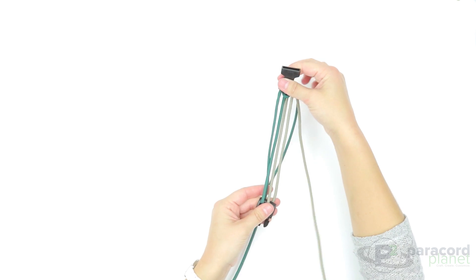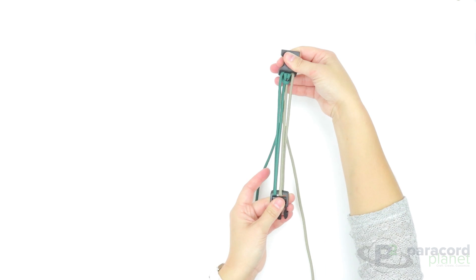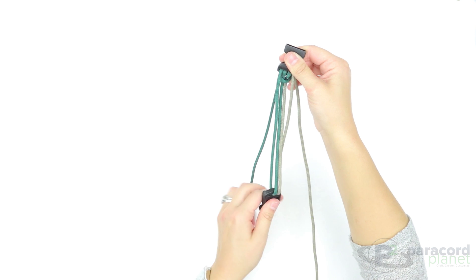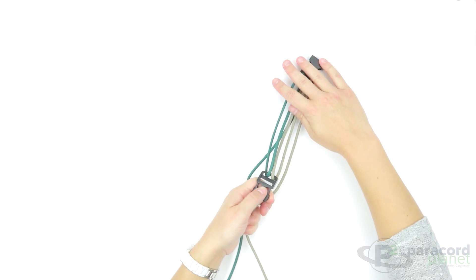Make sure all of your cords are straight and even, and then you're going to do that one more time. You're going to go in through the sides of the other end of the buckle.